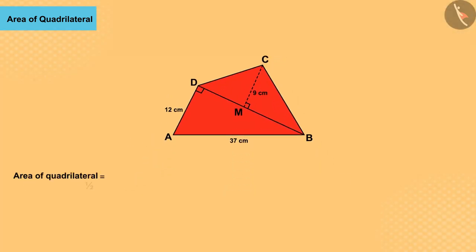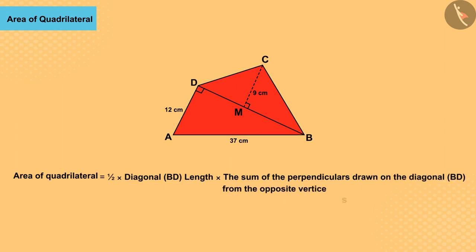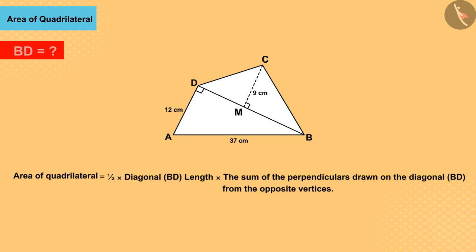We know that we can find the area of a quadrilateral with the help of this formula. But if we pay attention to the picture, we will find that we do not know the length of the diagonal of the quadrilateral.